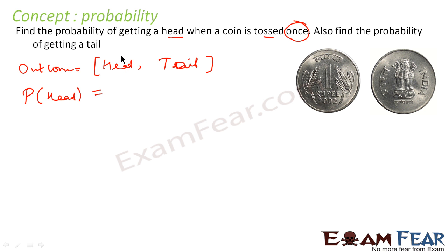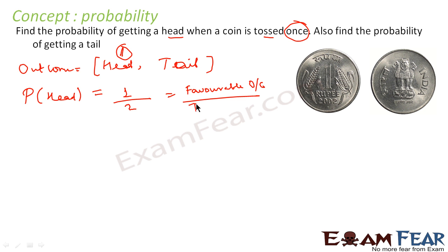The probability of head is favorable outcomes divided by total number of outcomes. The favorable outcome is one — head is the only favorable outcome. Total number of outcomes is two (head or tail), so probability of head is one by two. Similarly, probability of tail is also one by two.